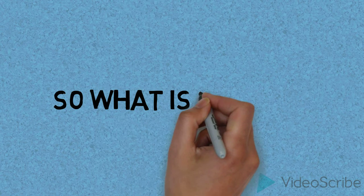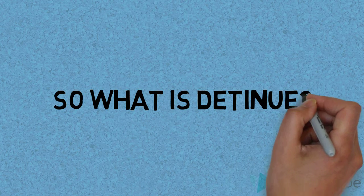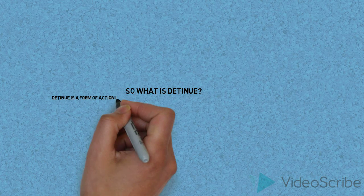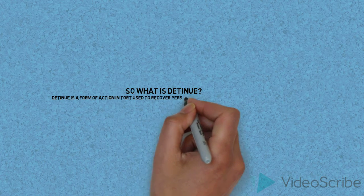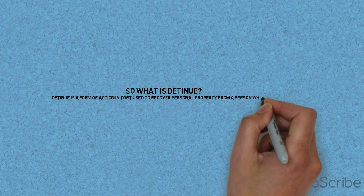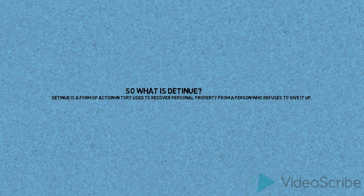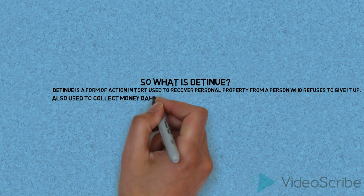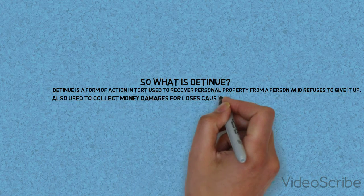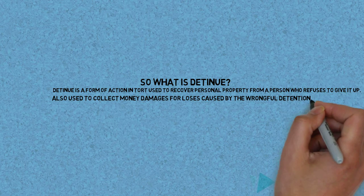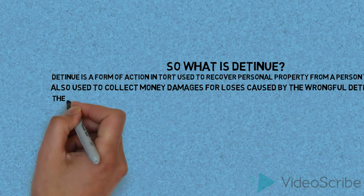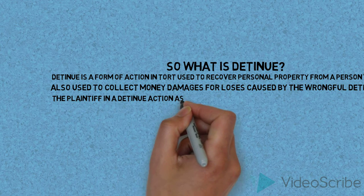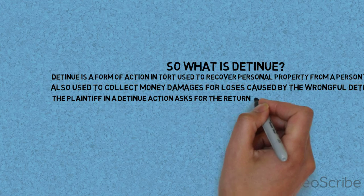So what is detenue? Detenue is a form of action in tort used to recover personal property from a person who refuses to give it up. It is also used to collect money damages for losses caused by the wrongful detention. The plaintiff in a detenue action asks for the return of the property in addition to damages for the duration of the possession.